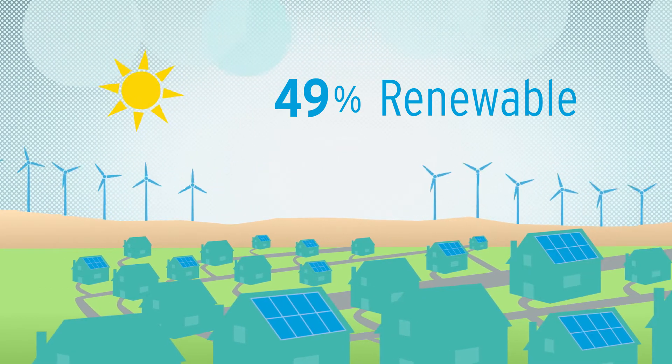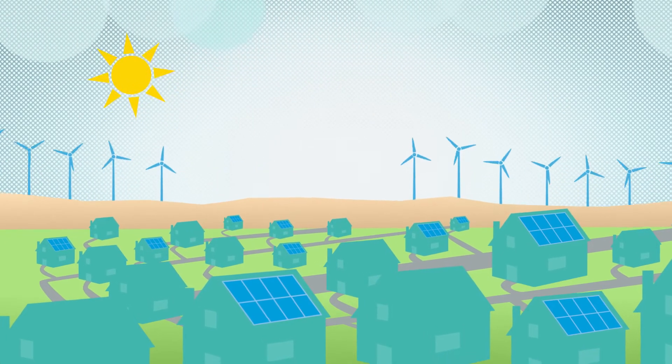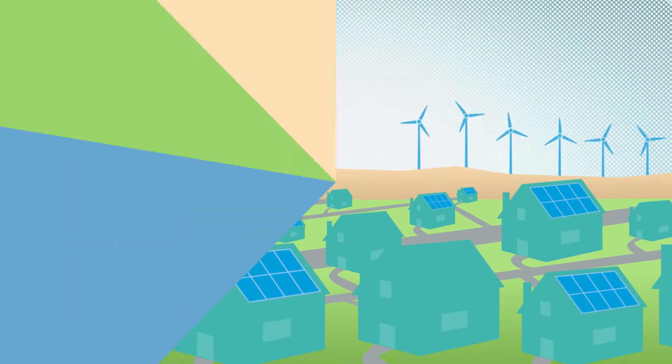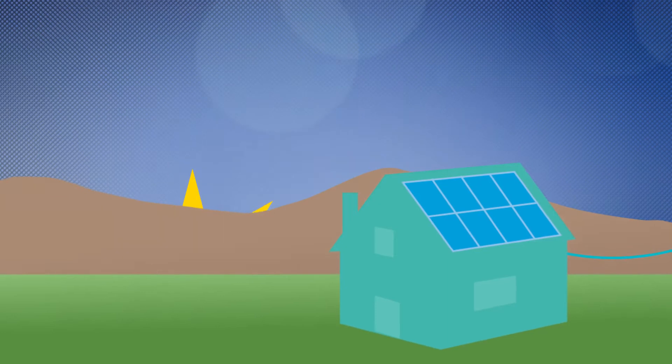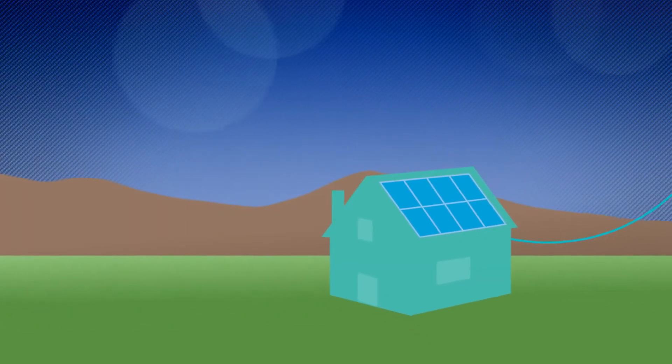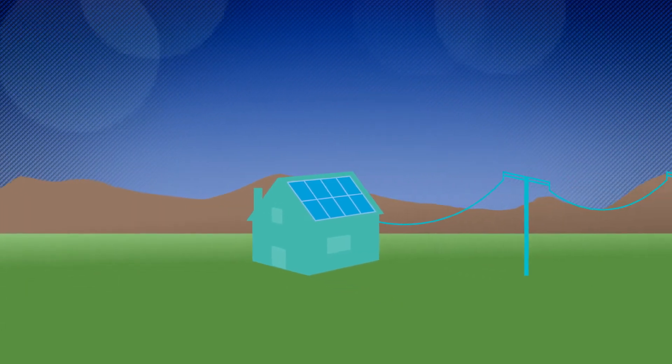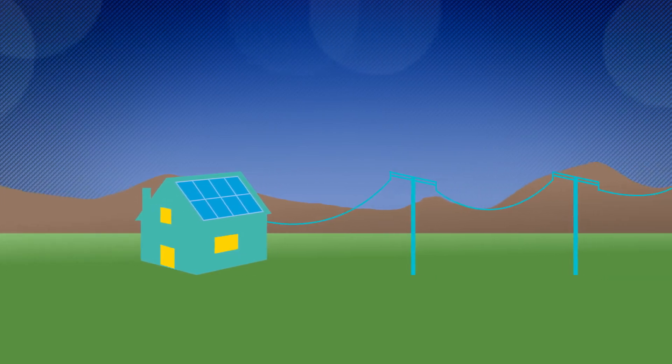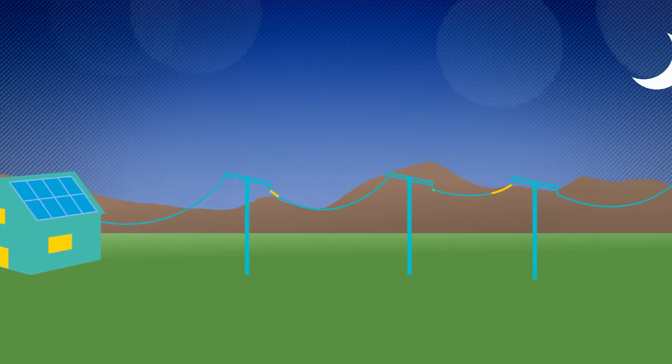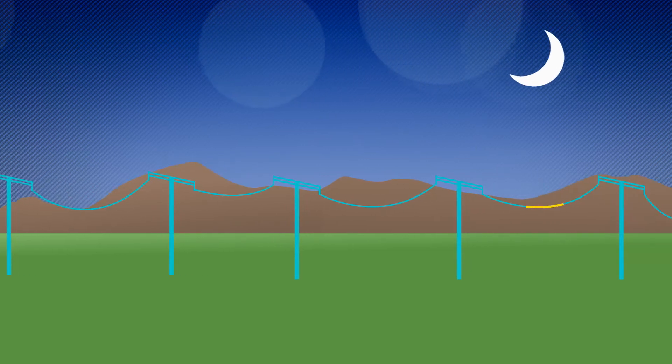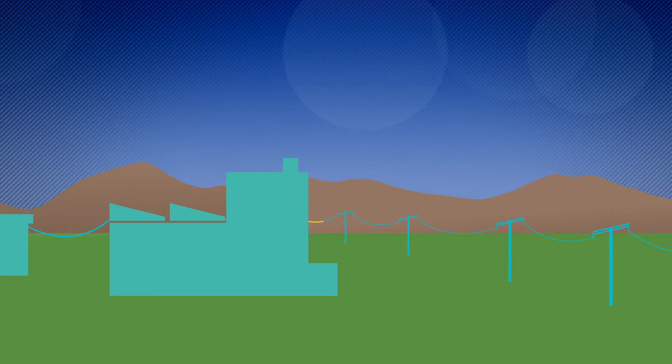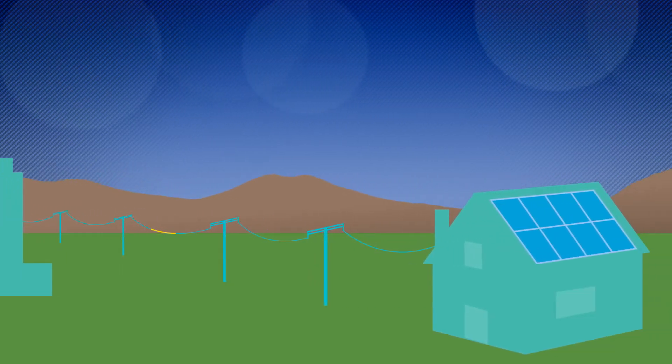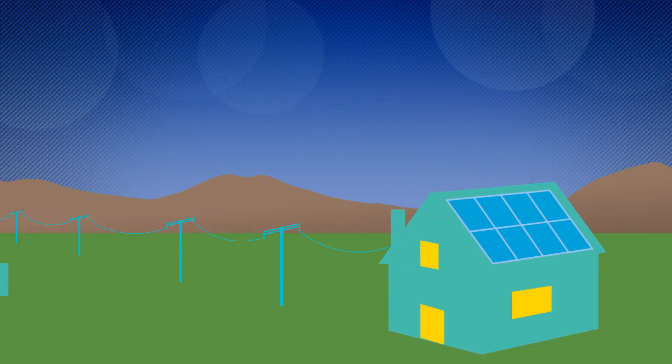What about when the sun isn't shining? After sunset or when the sun isn't shining, solar customers still need electricity. When this happens, they get their electricity from SDG&E and it gets to them through the electric grid. The grid is the wires, meters, substations, power plants, and all the other parts that make up the electric system. Their connection to the grid allows them to get the electricity they need when the sun isn't shining.